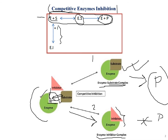So there are two paths. In the first path, the enzyme combines with the substrate to form an enzyme-substrate complex. In the second path, the enzyme combines with the inhibitor to form an enzyme-inhibitor complex. The active site has competition between the substrate and the inhibitor — whoever gets there first forms that complex.